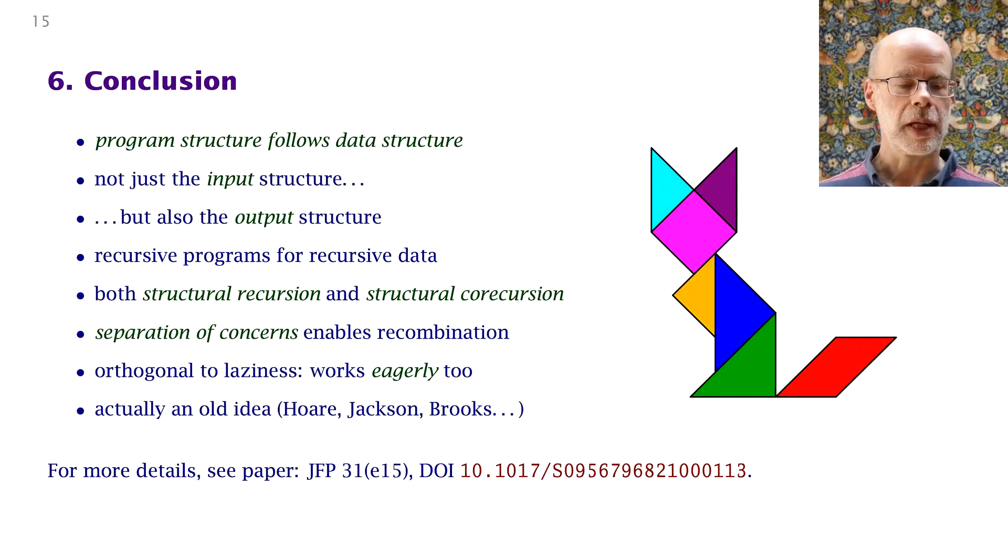I've used Haskell as my vehicle for this talk, but none of this uses laziness. It all works perfectly well eagerly. Structural co-recursions will need some termination argument to demonstrate that they're producing finite data, but generative recursion in the book How to Design Programs needs this anyway. So this is not new material that needs to be covered in a course. It's already there. And of course, what I've said is not new. It's all there really in the work from the 1970s by Tony Hoare and Michael Jackson and Fred Brooks and many others. There's more discussion and there are more examples in my paper, How to Design Co-Programmes, which is in Journal of Functional Programming. Thank you.